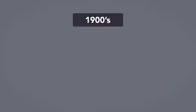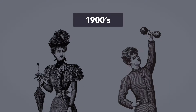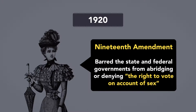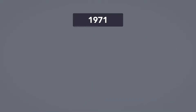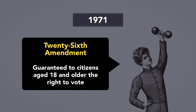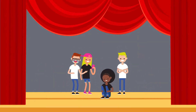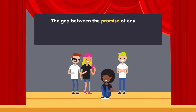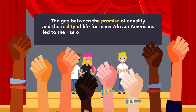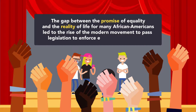In the 1900s, civil rights were expanded for American women and youth. In 1920, the states ratified the 19th Amendment, which barred state and federal governments from abridging or denying the right to vote on account of sex. The 26th Amendment, ratified in July 1971, guaranteed citizens aged 18 and older the right to vote, down from 21. While the United States cast a vision of equality in the Reconstruction Amendments, resistance and racial discrimination continued well into the 20th century, leading to the rise of the modern movement to pass legislation to enforce equality under the law.